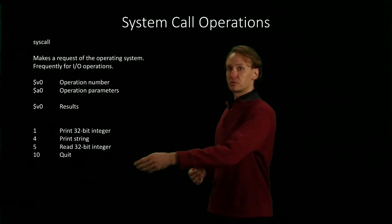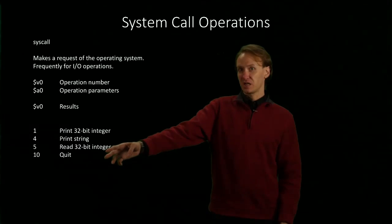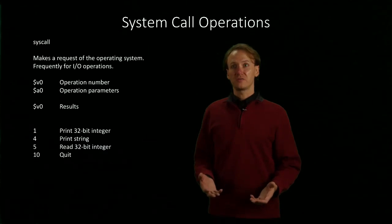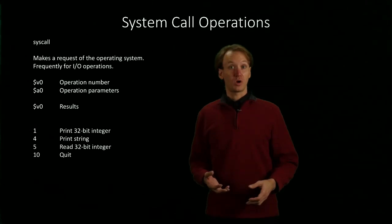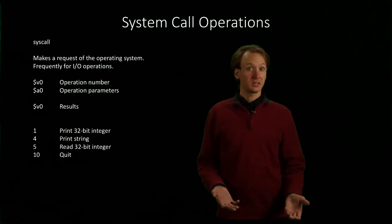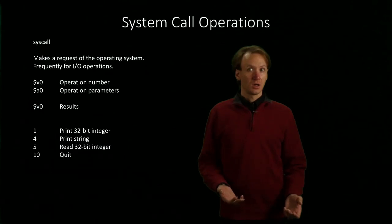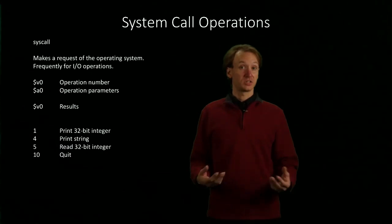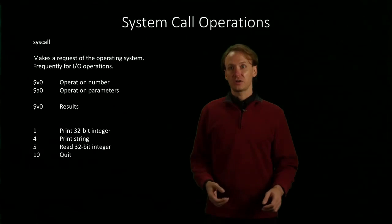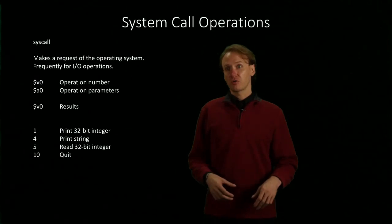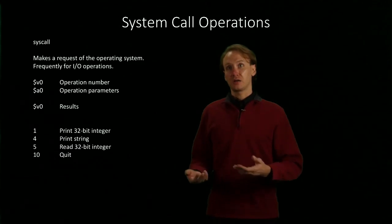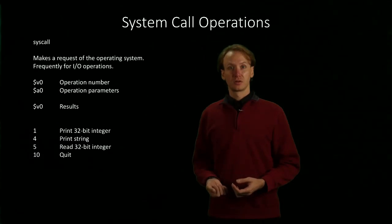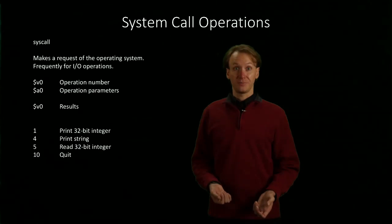I've got a handful of examples here. For example, I would put 1 in v0 if I want to print out a 32-bit integer. I would put 4 into v0 if I want to print a string. If I just want to quit my program, I would put 10 in, and then follow that up with the syscall instruction.